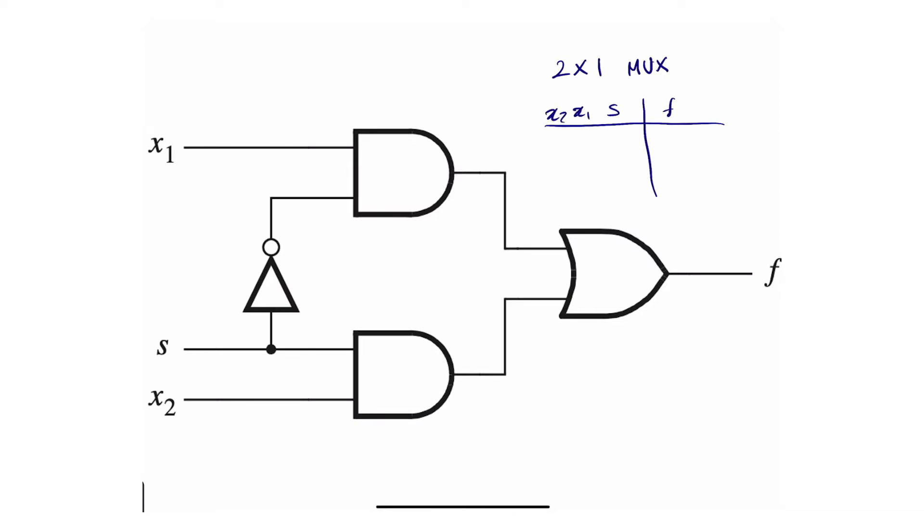Some of you might have seen this multiplexer represented this way. What does a multiplexer do? A two to one multiplexer takes one of the inputs, which I call X1 and X2, and connects it to the output based on the value of S. So I'm either connecting X1 to F or X2 to F depending on whether S is 0 or 1.